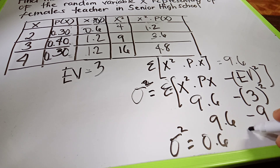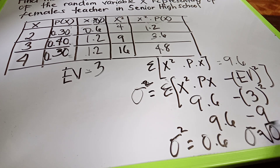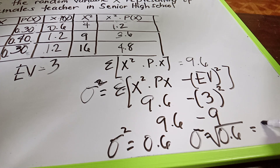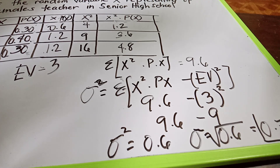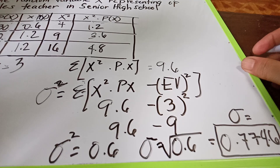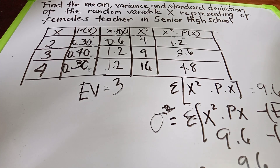For the standard deviation, we take the square root of 0.6. The square root of 0.6 is approximately 0.7746. That is our standard deviation. Remember: if probabilities are given as percentages, always convert them to decimals first before computing.